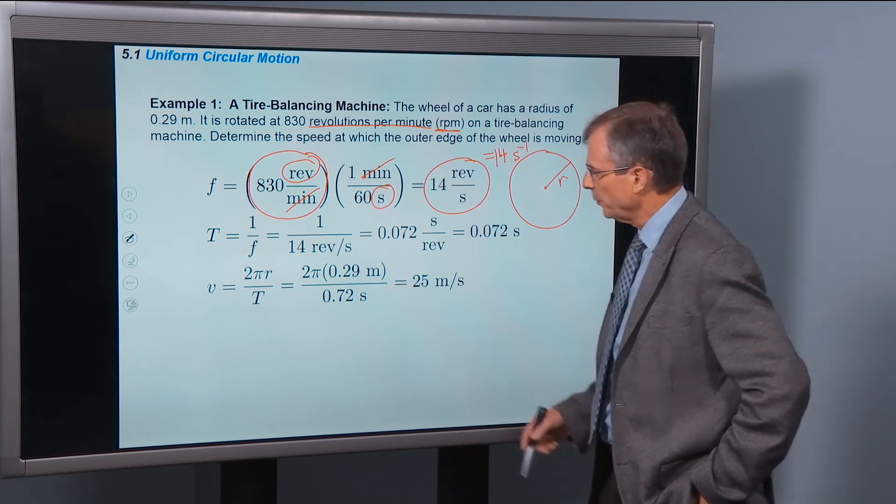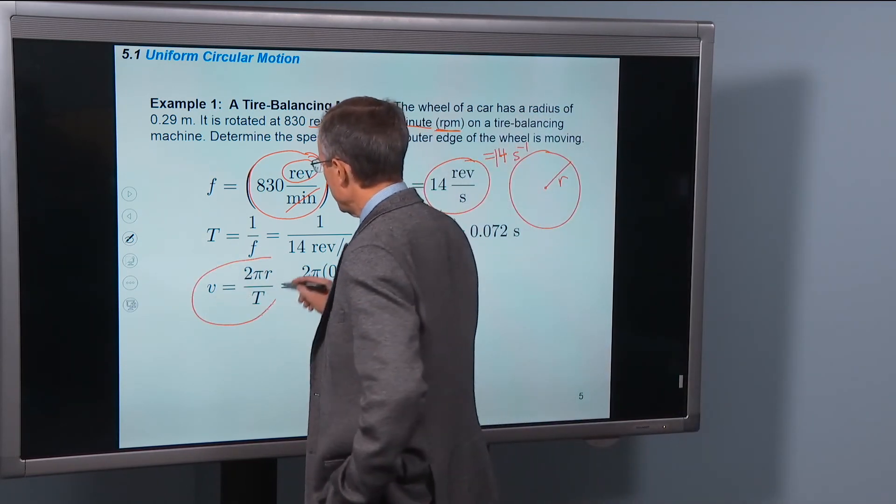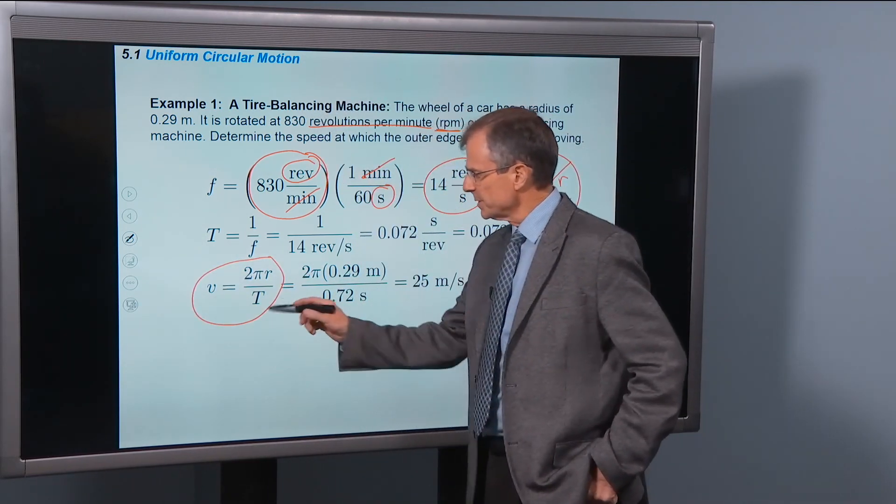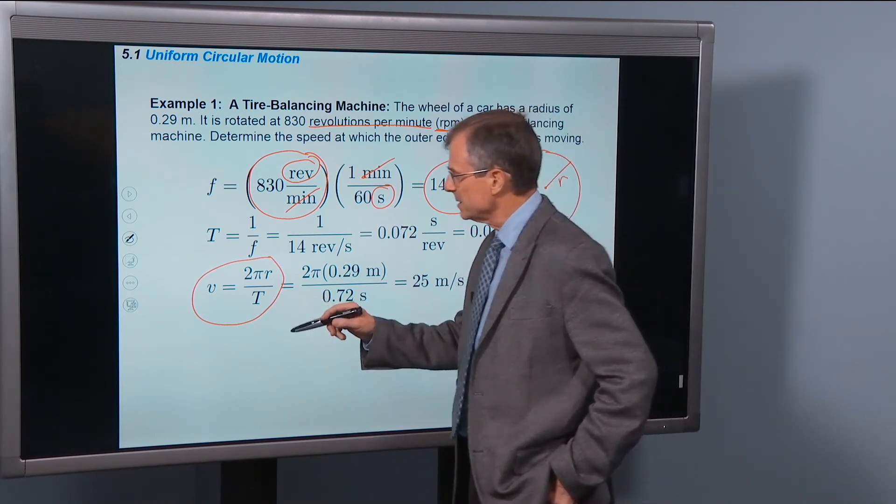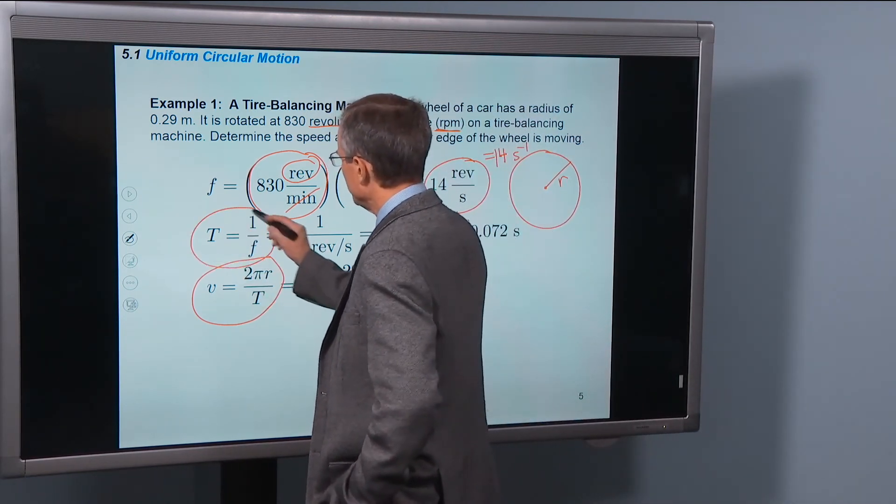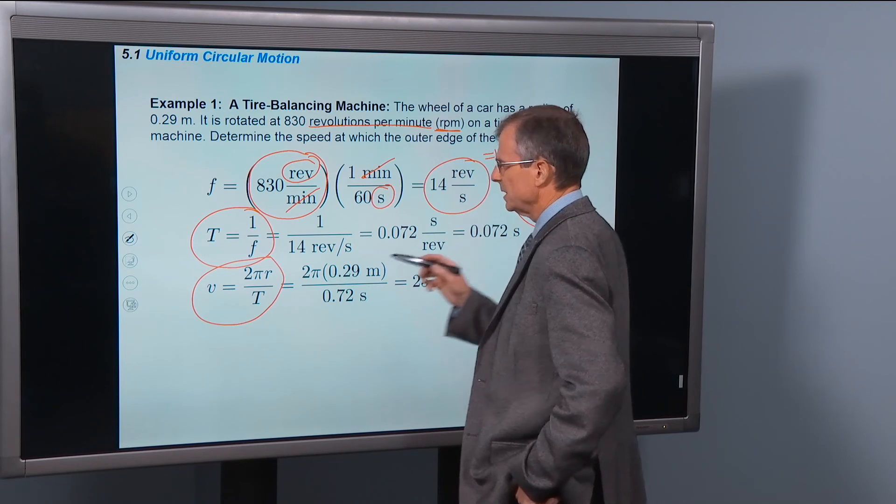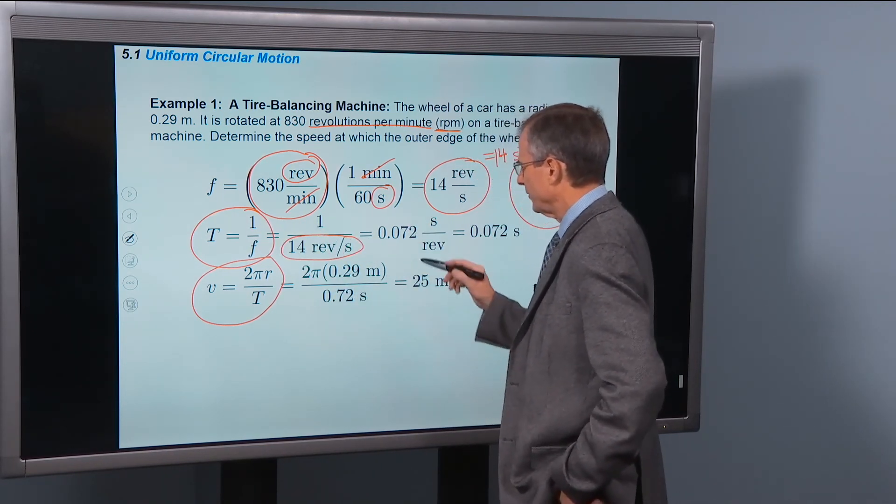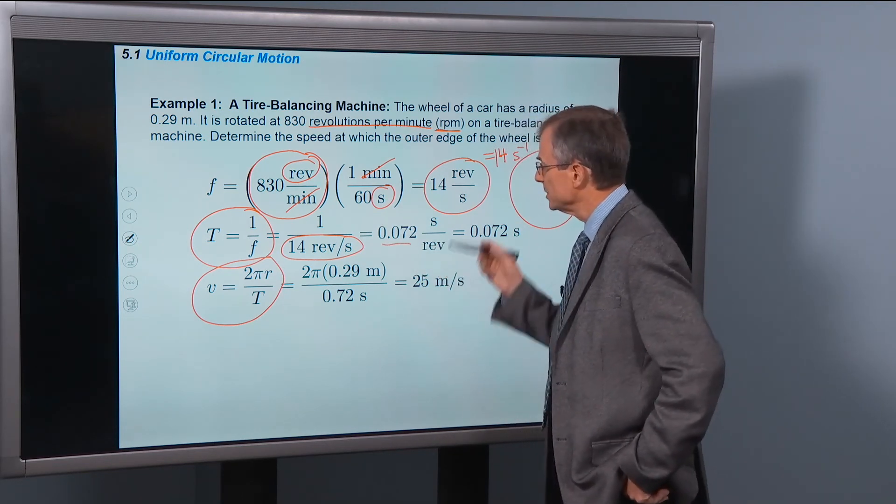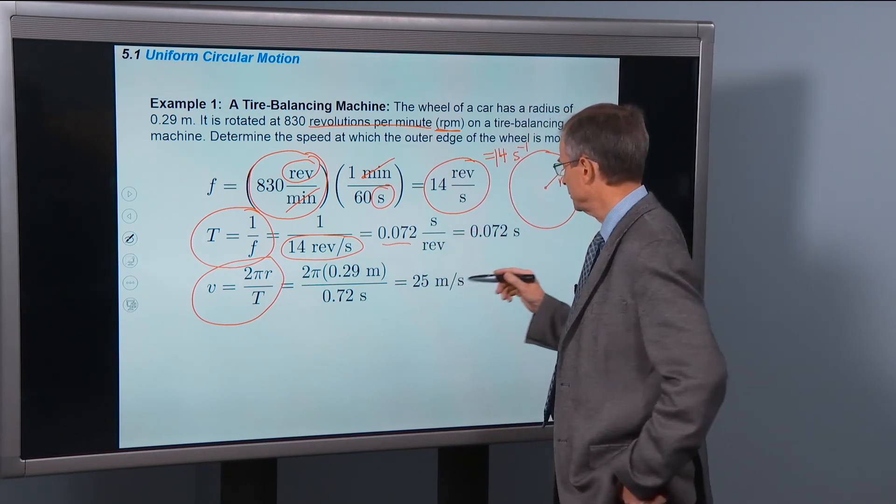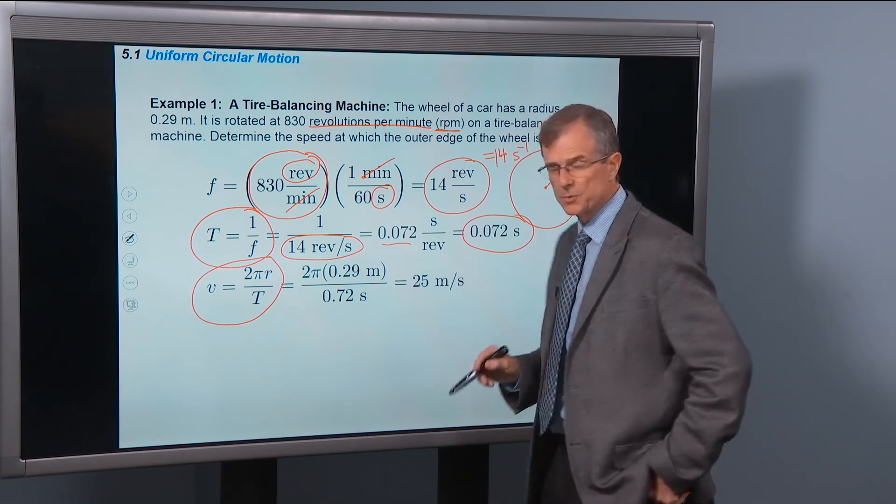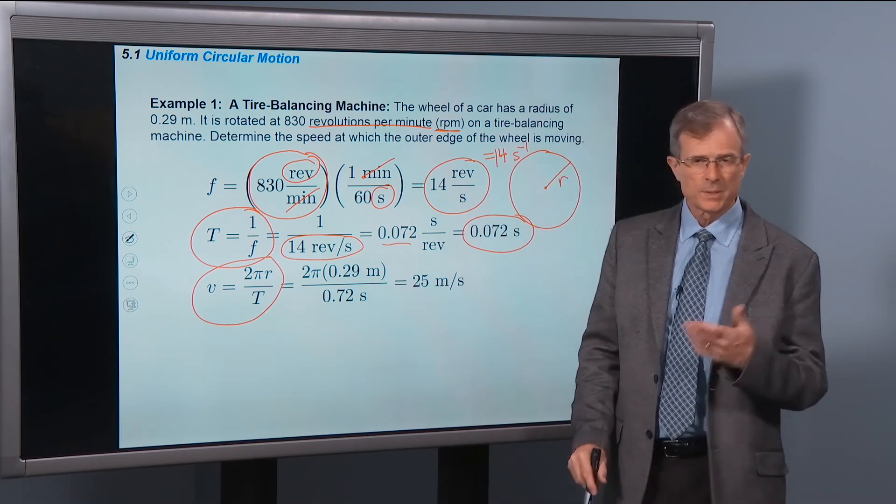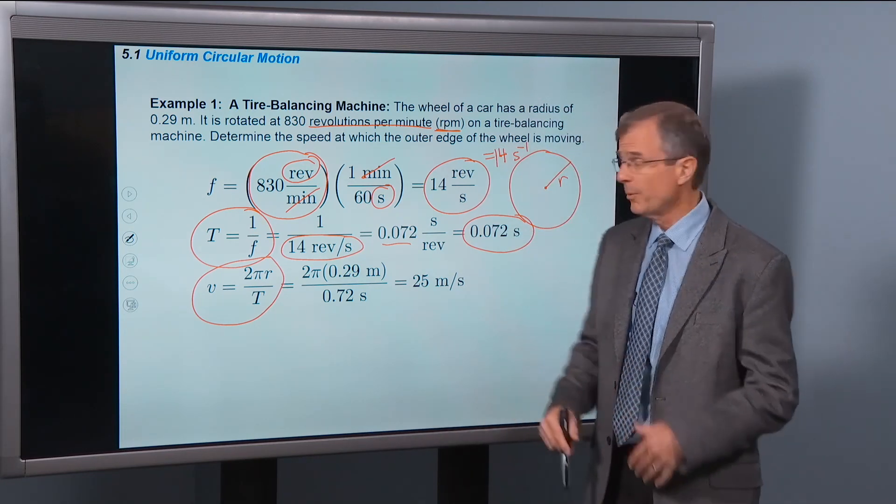So the period, if we want to find the speed, that's what we're after, then we're first going to need to know what the period is. The period is just 1 over the frequency. And we've got the frequency. So it's 1 over 14 revolutions per second. Divide 1 divided by 14 gives 0.072 seconds per revolution. Or we normally just write that as 0.072 seconds. We don't put the per revolution in there.